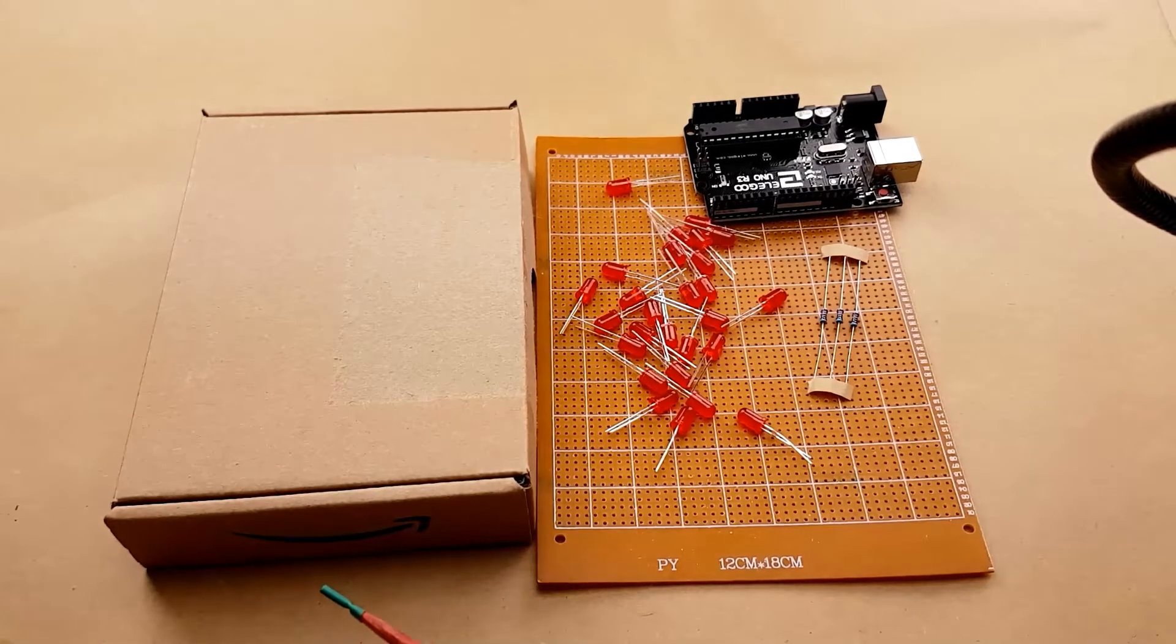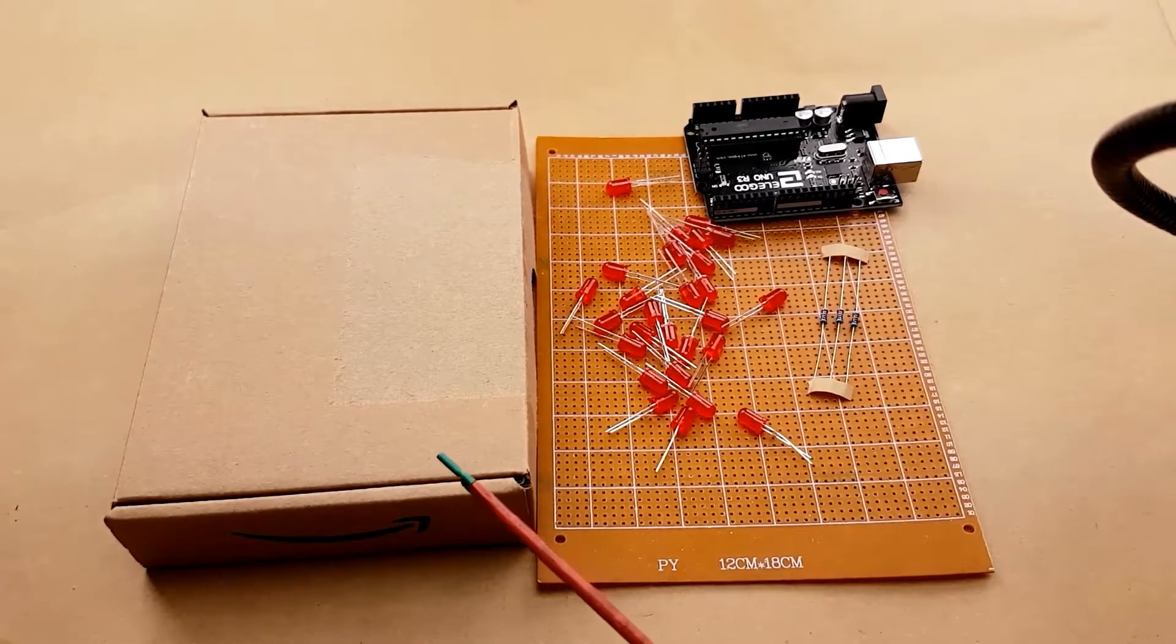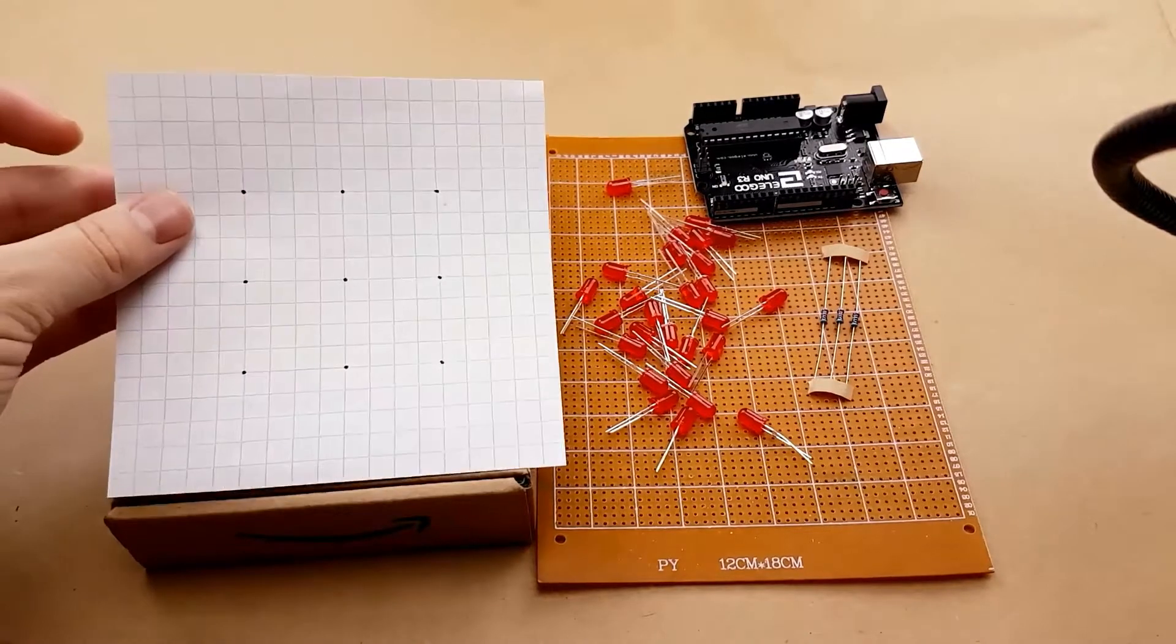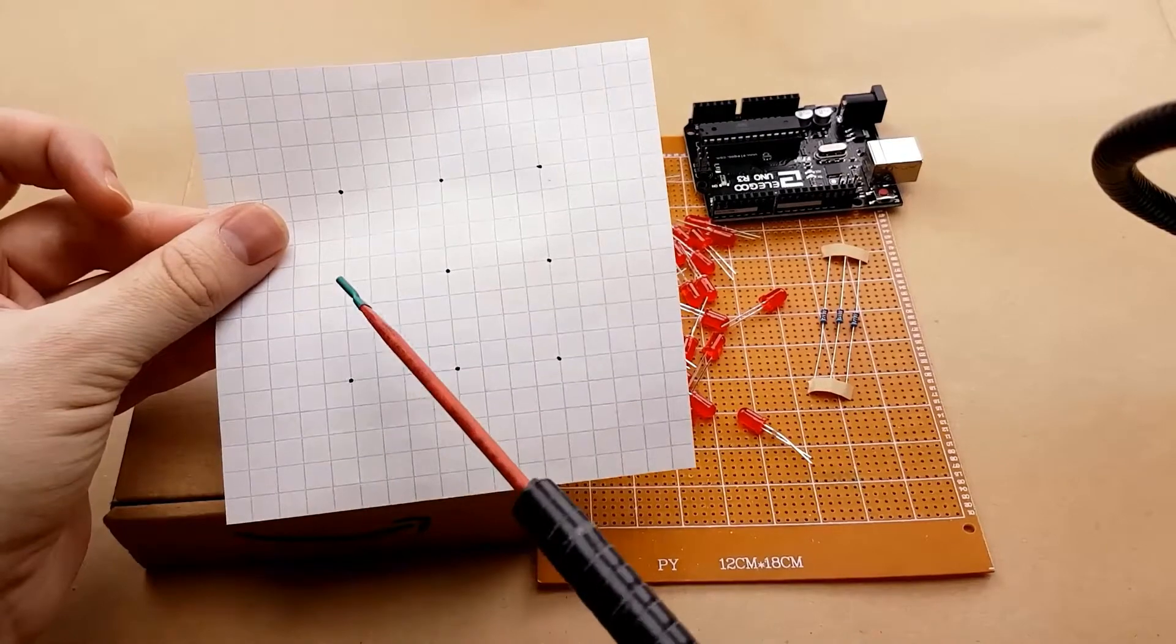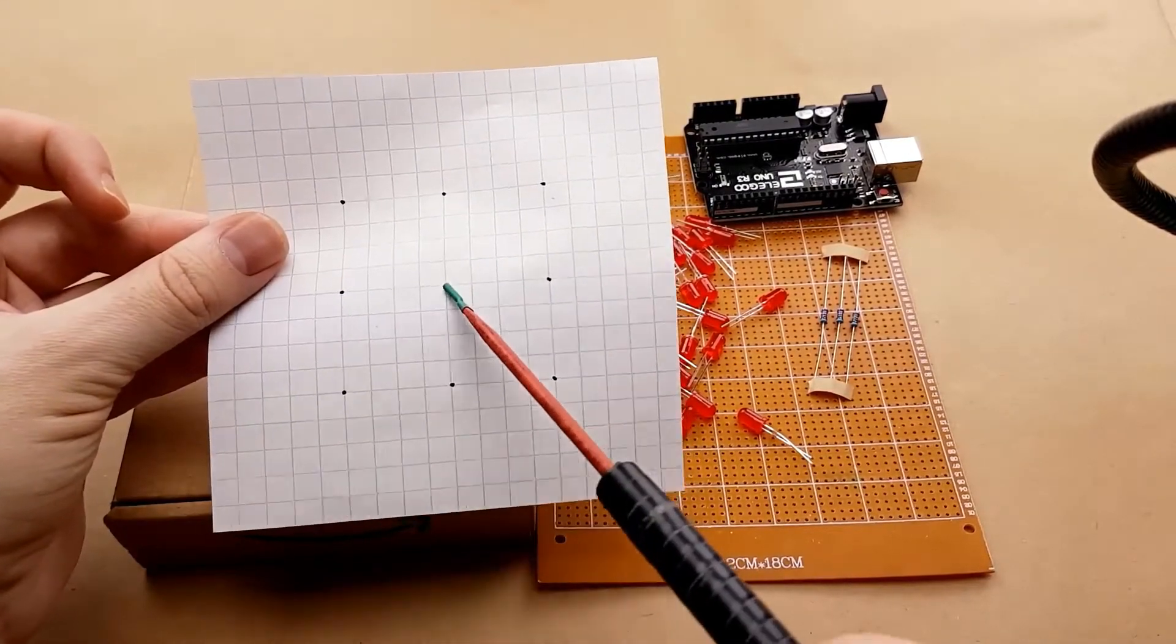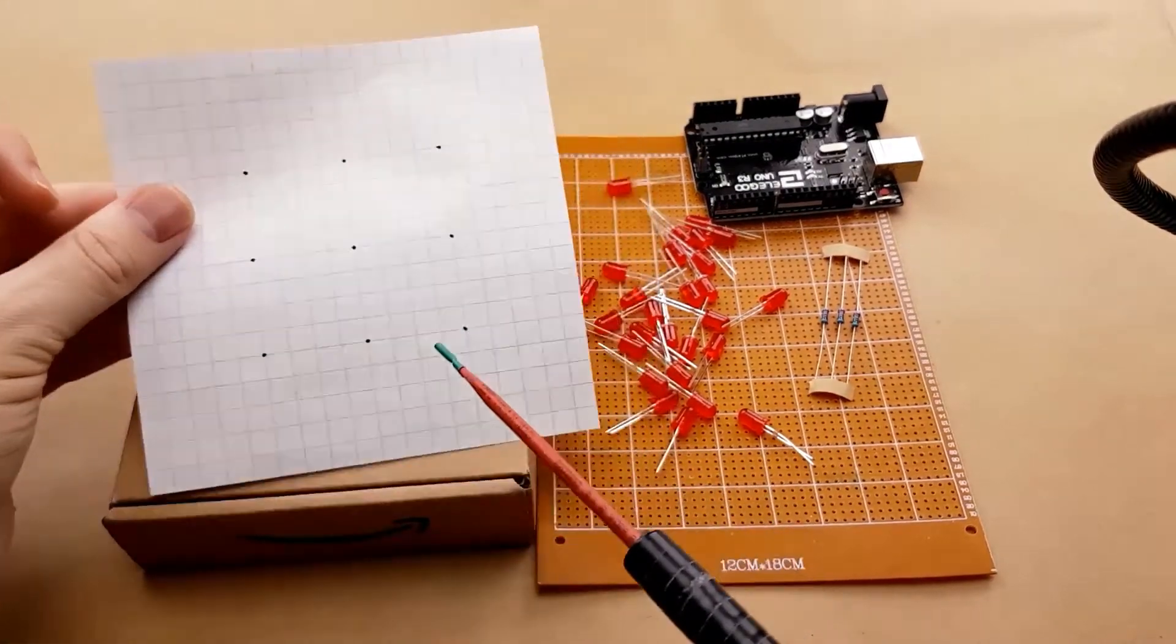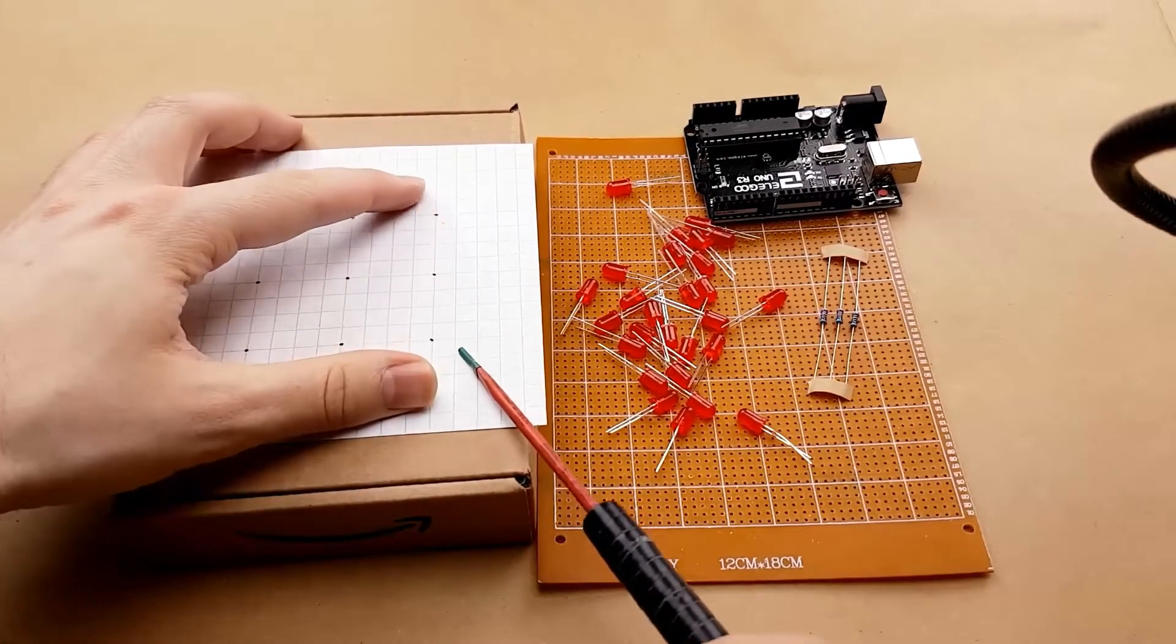The first thing is making the layers of the cube, since there will be three layers of nine LEDs. So what I did is I took a bit of graph paper, and I measured out one inch by one inch and put a dot. And then what I'm going to do is I'm going to tape this down to this little cardboard box.